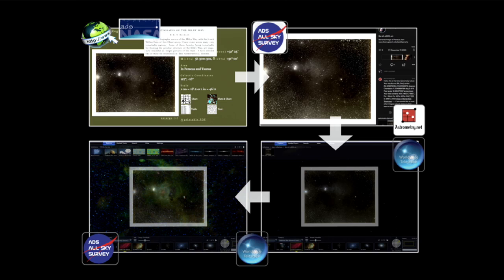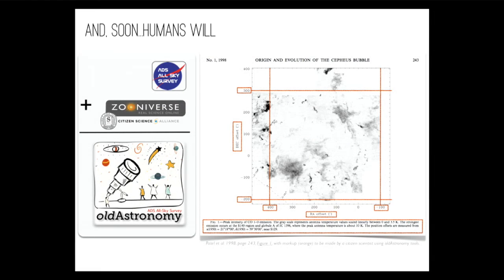What is the ADS All-Sky Survey? Part of it is an effort — now quite underway and a lot of it works — to suck all of the images out of all of the journals in the ADS and put them through this kind of pipeline and let you see them on the sky. There are two other parts to the ADS All-Sky Survey, one of which is finished and one is just beginning.